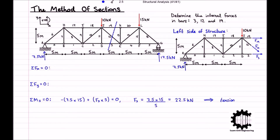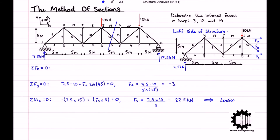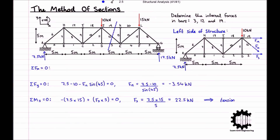Taking the y-coordinate direction as positive, the sum of all vertical forces equals 7.5 minus 10 minus F12 times sine 45, which equals zero. Rearranging for F12: F12 equals 7.5 minus 10 all divided by sine 45, which equals negative 3.54 kilonewtons. Since F12 is negative, bar 12 is under compression.